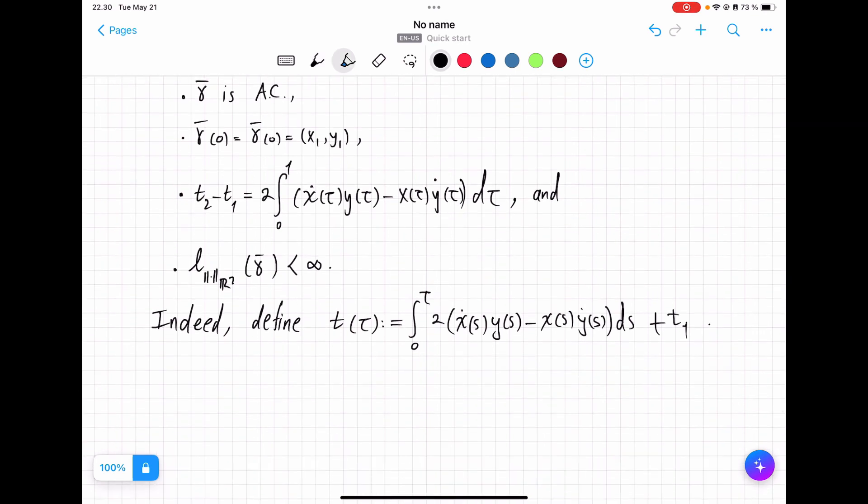Now, what happens here is that T of 0 is T1, and T of 1 is equal, because of the third condition above, this will be T2 minus T1 plus T1, which is T2.